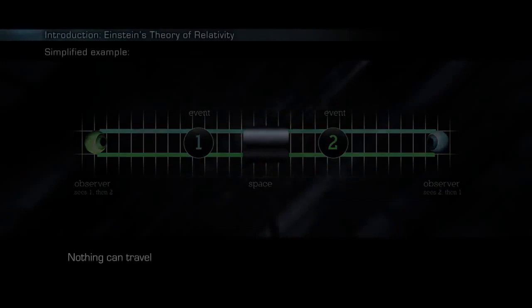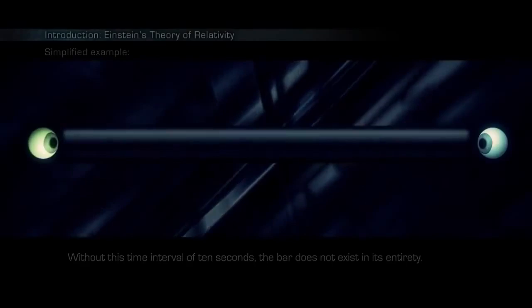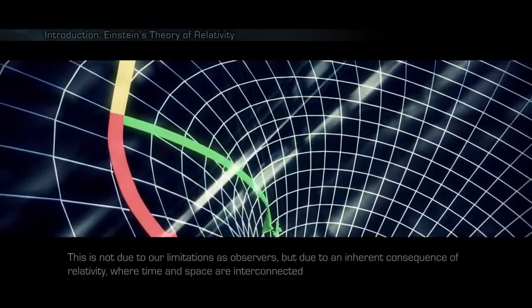Nothing can travel faster than the speed of light. This means that if a bar of 10 light seconds long would be pushed forward, it would take 10 seconds before the action can take place on the other side. Without this time interval of 10 seconds, the bar does not exist in its entirety. This is not due to our limitations as observers, but due to an inherent consequence of relativity, where time and space are interconnected and cannot exist without each other.